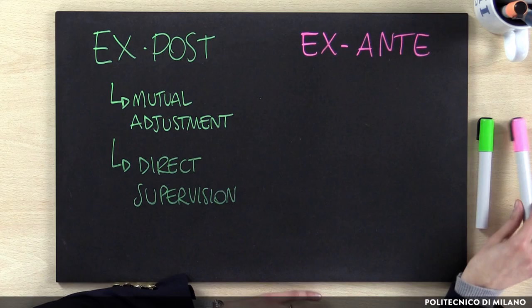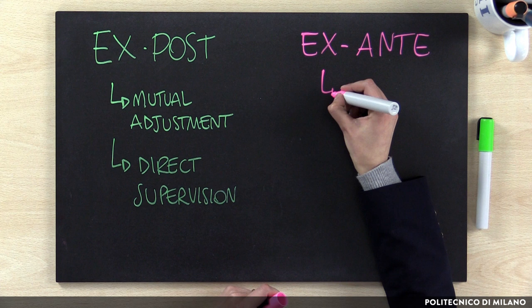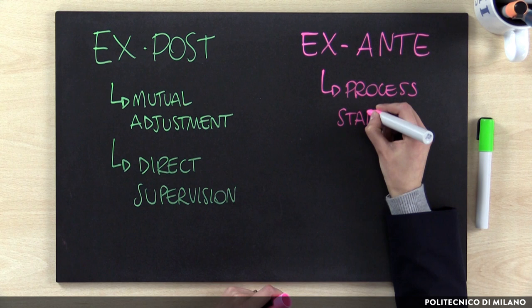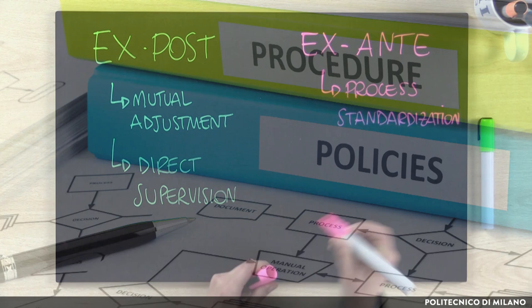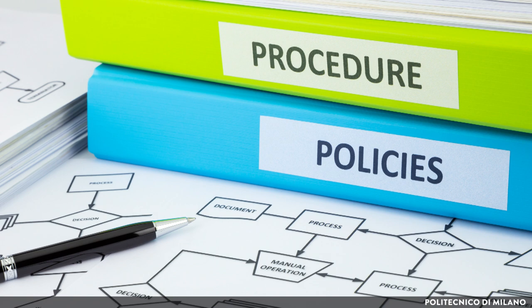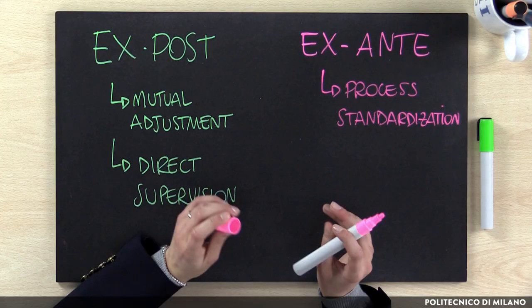Let's move now to the ex ante mechanisms. As mentioned before, all ex ante mechanisms refer to the concept of standardization. The first is process standardization, which pertains to the definition of the process workflow and activities to clarify how the activities are supposed to be done. Typical examples of process standardization are quality manuals, checklists, job descriptions, or frequently asked questions. This type of mechanism is suitable for stable environments and stable processes.